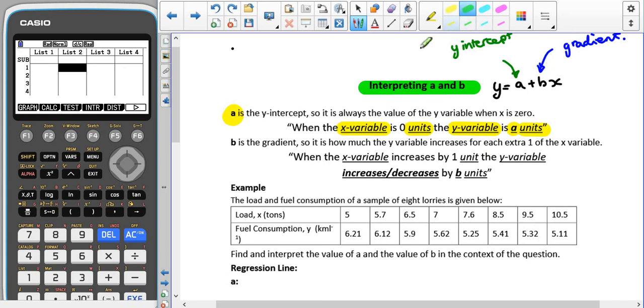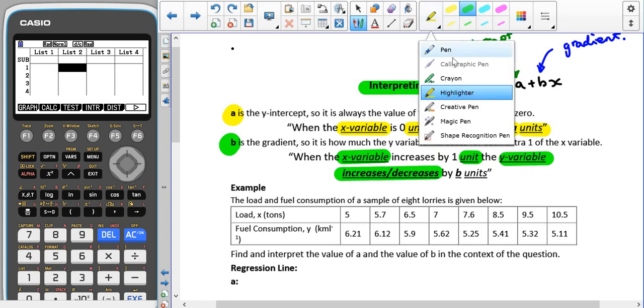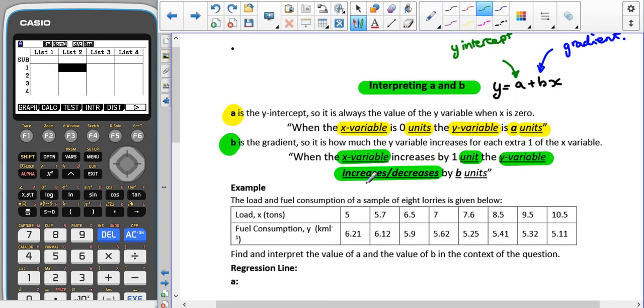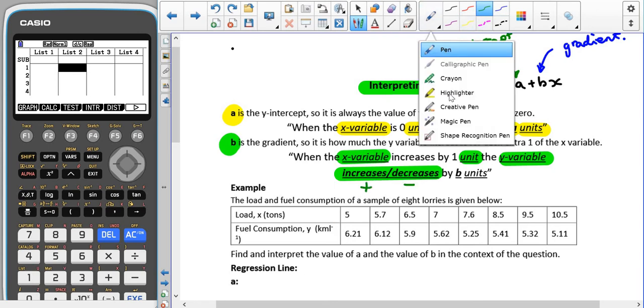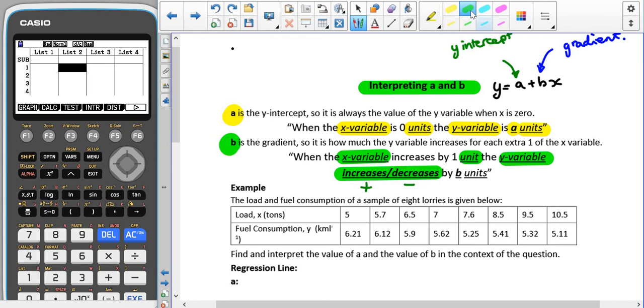When we're interpreting b, remember that that's the gradient. So it's whenever the, whatever the x value variable is, increases by one, whatever the units are, the, whatever the y variable is, increases or decreases, and that depends on whether we have a positive or a negative value for b, by whatever b is, and then whatever the units are for y.